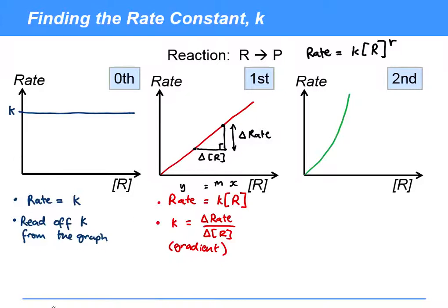In this case, rate equals K times concentration of reactant squared. Consequently, it's not possible to determine the rate constant from this plot because the gradient is constantly changing. You could use other methods like plotting R squared against rate and using the gradient, or a log-log plot, but these are beyond A level scope.